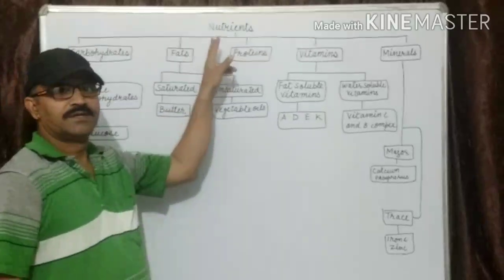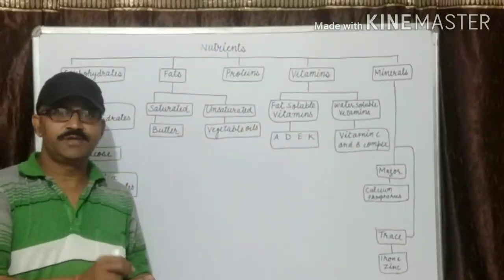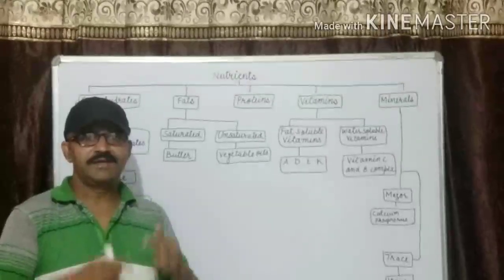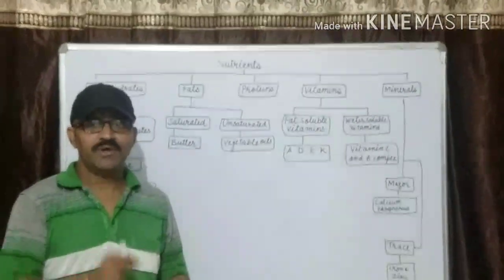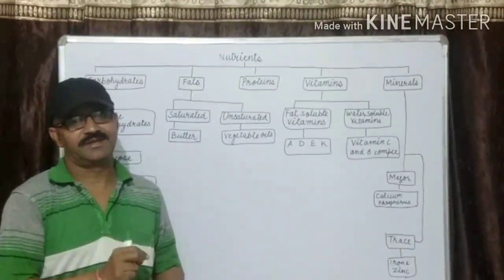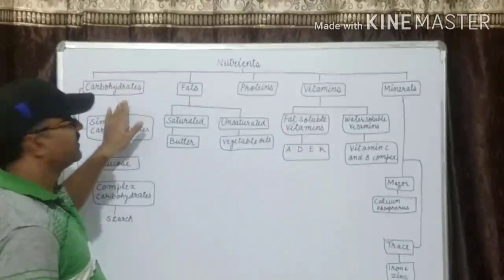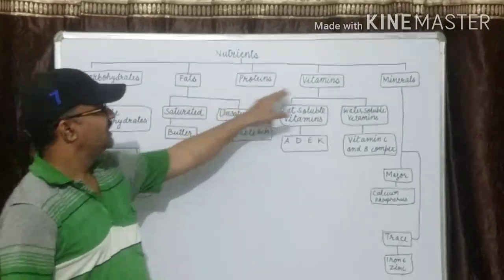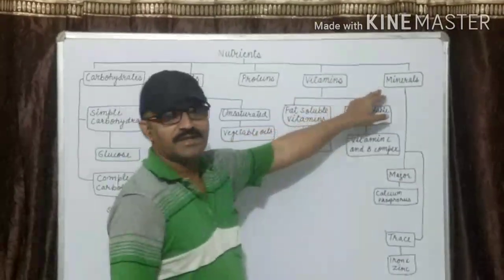What are the nutrients? Nutrients are the substances that are needed by our body for health, growth and function. Nutrients are five types: number one carbohydrates, fats, proteins, vitamins, minerals.